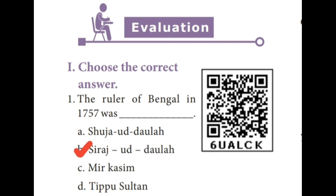Choose the correct answer. First one: the ruler of Bengal in 1757 was — the correct answer is Sirajuddalla.